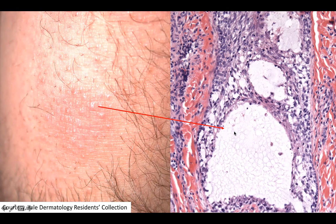Biopsy of one of these papules shows a hair follicle right here, and the hair follicle is expanded by some intercellular mucinous change with some lymphocytes as well in the follicular epithelium. Can you guess the diagnosis?